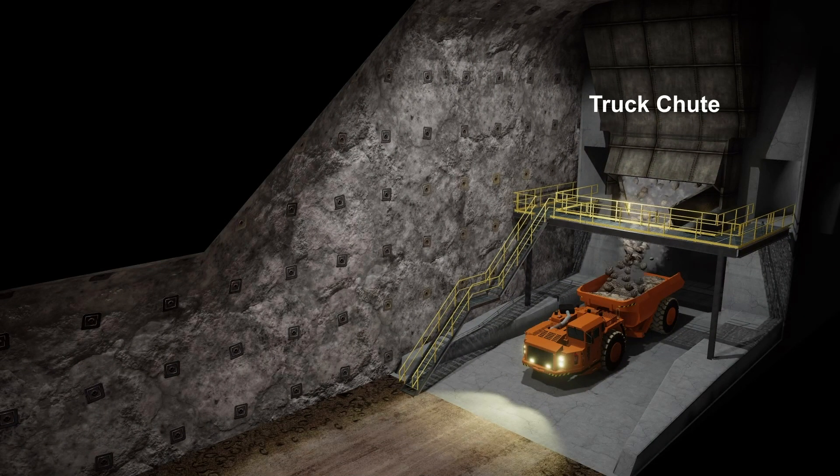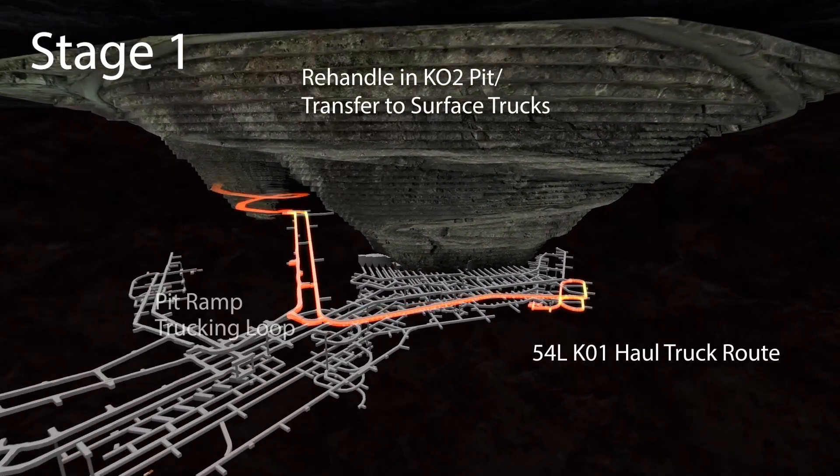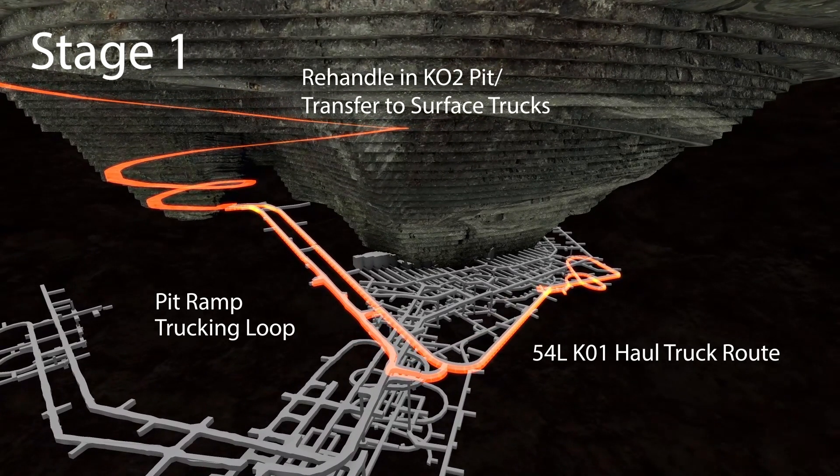The ore handling system matures over three stages. Stage 1: A temporary pit ramp before the production shaft is commissioned and before K02 ore body commences. Deferring the K02 ore body ensures the integrity of the pit ramp.